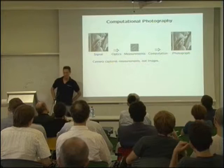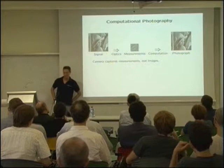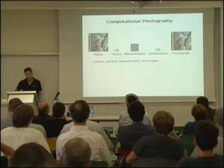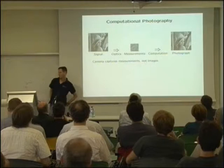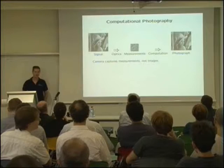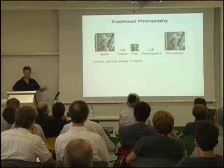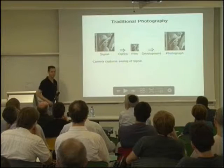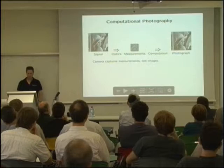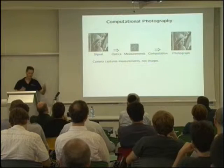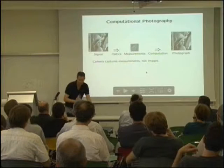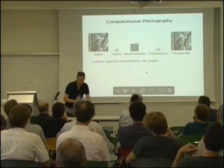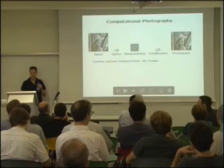What is computational photography? It's a new subfield of engineering, computer science, and optics which talks about designing new cameras. What makes it different from traditional cameras is that the camera captures measurements, not images. Contrast that with traditional cameras — either analog cameras where you work very hard to make the optics capture a copy of what's outside in the world, a local analog of the signal. In computational photography, the things measured by the camera can be arbitrary numbers.